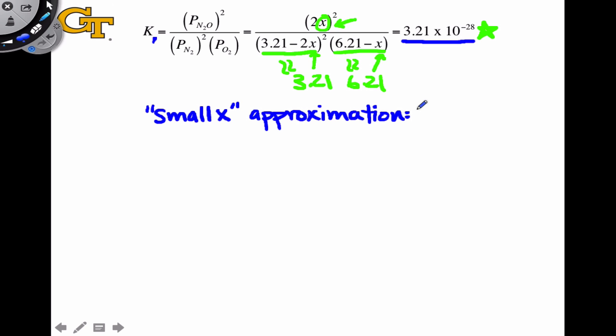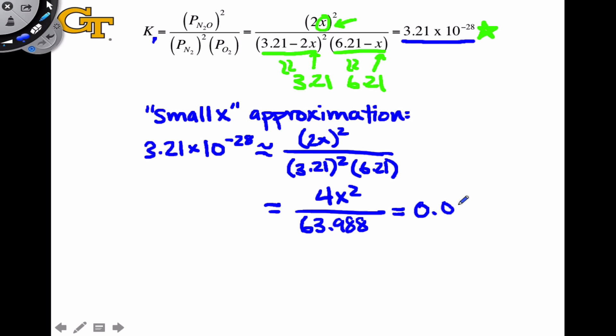In this case, we can make what I affectionately refer to as the small x approximation, which is the idea that because K is really small relative to the initial pressures, we can ignore x in terms where x is subtracted from or added to these initial concentrations. Applying the small x approximation here, we can set the value of K equal approximately to quantity 2x squared in the numerator. Don't mess with x in the numerator—we don't want to remove x terms entirely from the right-hand side of the equation. We still need to solve for an x value ultimately. But in the denominator, now we have a massive simplification where all that are left are numbers: 3.21 squared times 6.21, and this is easy enough to calculate. From here, we're going to end up with 4x² in the numerator and a simple number in the denominator. The whole right-hand side ends up being 0.0625x², and that's equal to 3.21 times 10 to the negative 28, approximately, since we made the small x approximation.